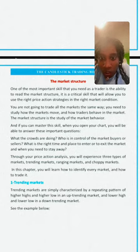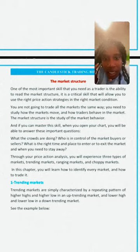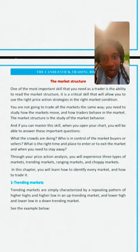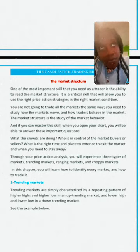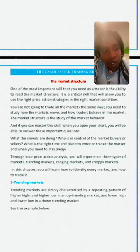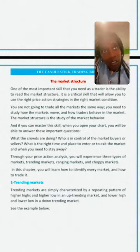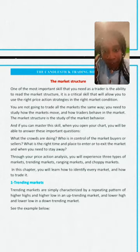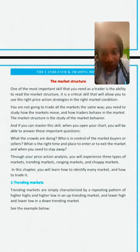A trending market means there is a repetition in price direction. If the market is going up, when the price is at its lowest, that's the lowest low. Every time it goes up, it creates a higher low. And when the market reaches a new high, it keeps creating a higher high.